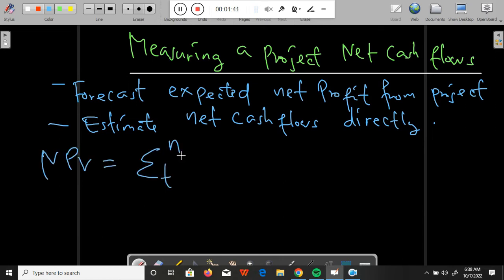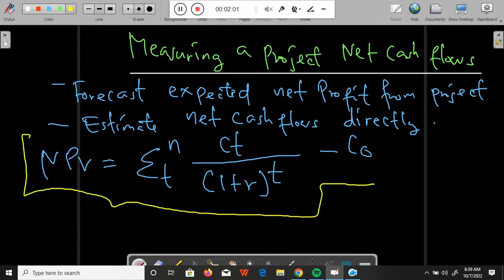The net present value formula is given by the summation of Ct divided by 1 plus R raised by t, minus C0. What is Ct? Ct represents the net cash flow generated by the project at time t, and C0 represents the initial cash outlay on a project.